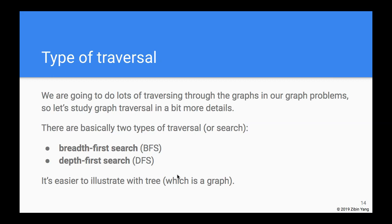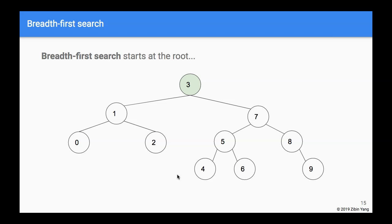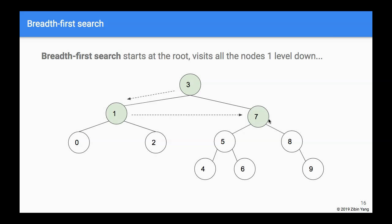One is called breadth first search, also referred to as BFS. The other type of traversal is called depth first search. We can definitely do this on a graph but it's easier to see it on a tree, so we'll do it with a tree. What a breadth first search does is start at the root — I have a tree here, sort of balanced — we start at the root, number three, and then we visit the nodes that are one level away: one and seven.